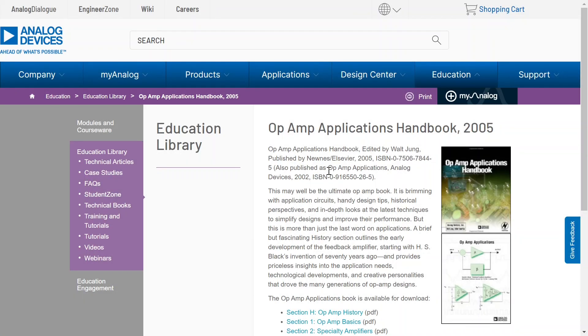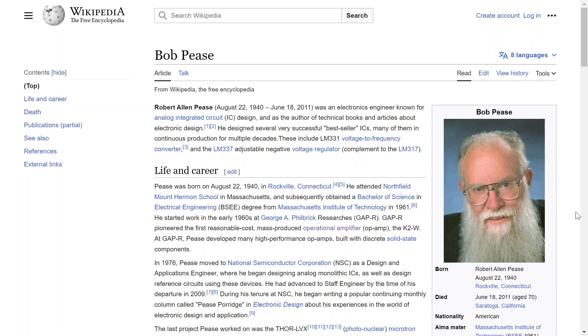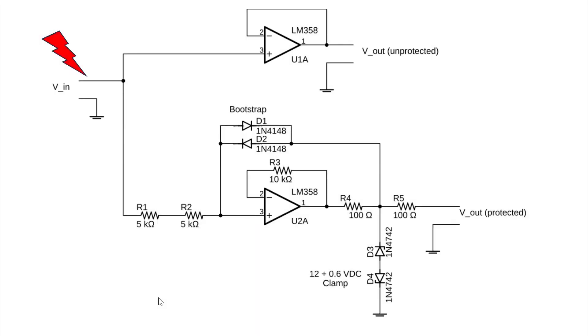Before we go any further, I should mention that the circuit I'm using is derived from this handbook. I would encourage every one of you to go to Analog Devices and find this op-amp applications handbook, as it's a very useful reference for your analog designs. I would also encourage you to read the works of Bob Pease, as some of the techniques I describe in this video are directly attributed to him. And now, back to our circuit.